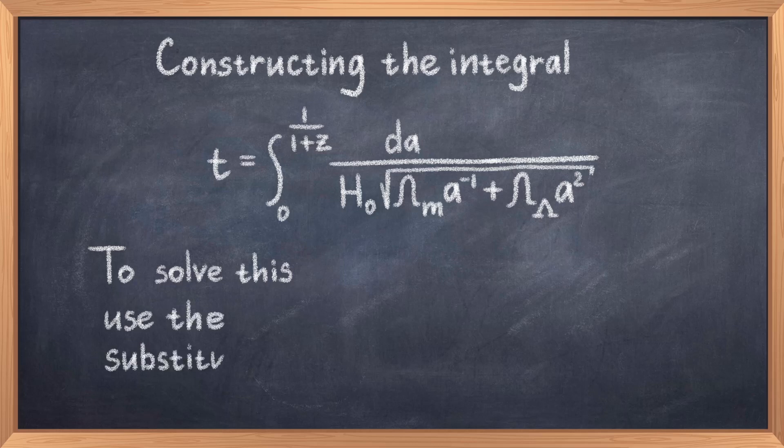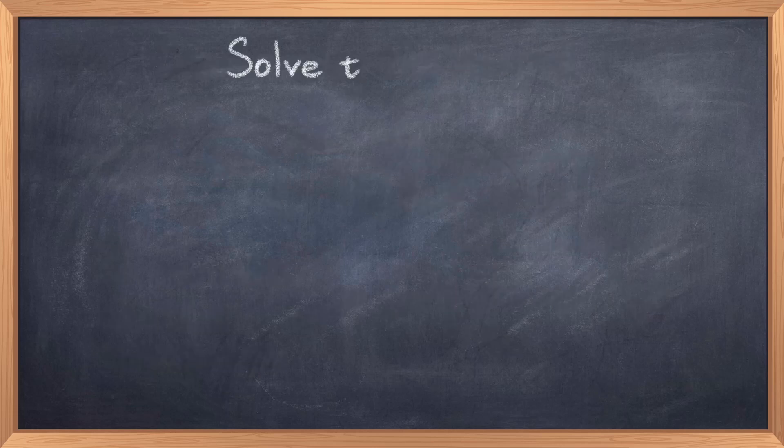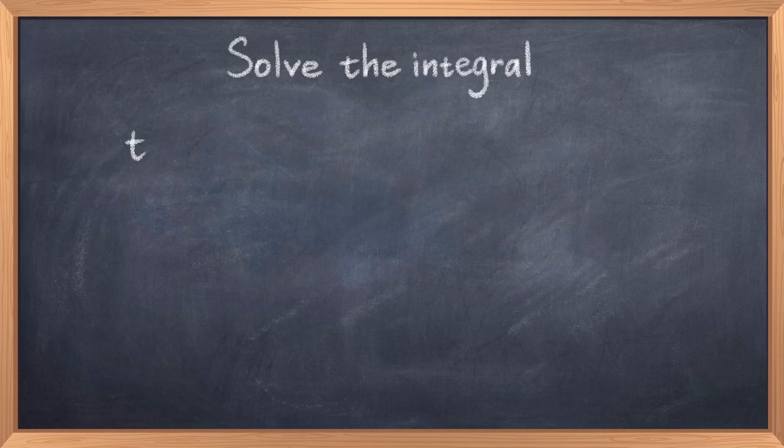This can be done with a computer or by hand. It's not the easiest thing to do by hand, but you can do it using the following substitution: define a equals the cubed root of (Ω_m/Ω_λ) times sinh²(y). To make this work, one can pull out a factor of √a and then a factor of Ω_m. I'll skip showing this because it's just tedious algebra. If you want, you can do it yourself. This substitution might not seem like the most obvious choice, but using clever algebra it works out as a very simple integral.